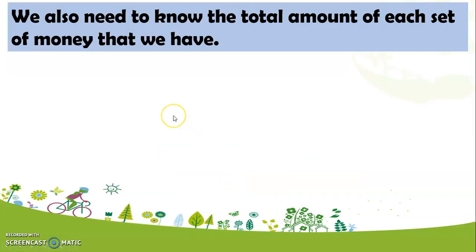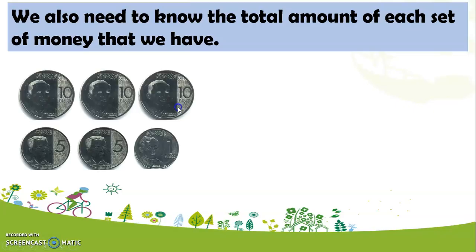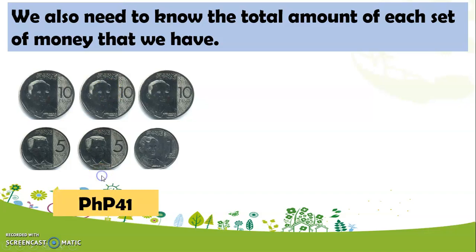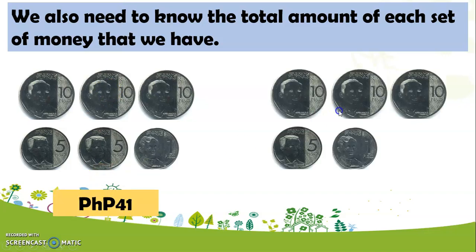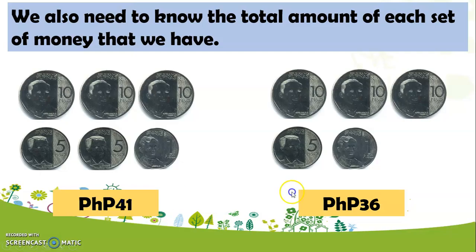We also need to know the total amount of each set of money that we have. So, we have here in this set 41 pesos, and in this set we have 36 pesos. And as we can see, 41 pesos is greater than 36 pesos. That's why we use the symbol more than.